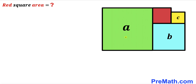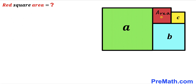Welcome to pre-math. In this video we have four squares of different sizes as shown in the diagram. The area of the green shaded square is a square units, the area of the blue square is b square units, the area of the yellow square is c square units, and our task is to calculate the area of the red shaded square.